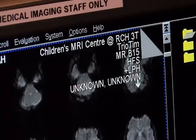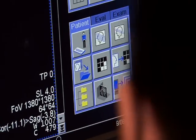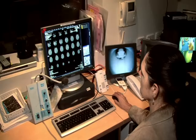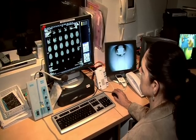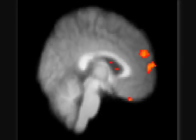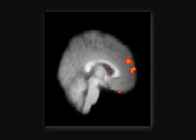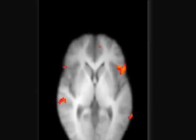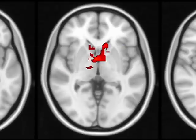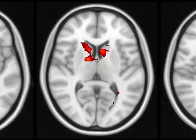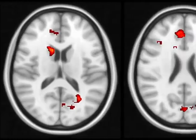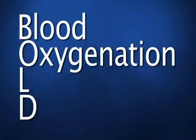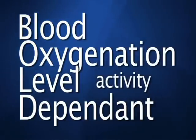However, what an MRI doesn't reveal is which parts of the brain are involved in different types of thinking. For this, we need to examine changes in MRI responses that occur when different parts of the brain are involved in performing a task. Functional MRI, or fMRI, examines these changes in brain responses. What an fMRI can accurately record is the BOLD response — the blood oxygenation level dependent activity that we record.